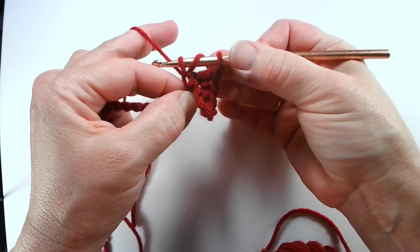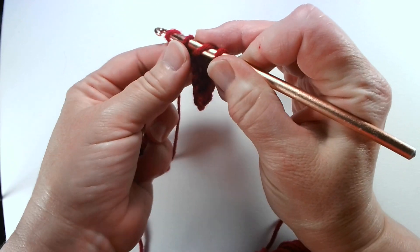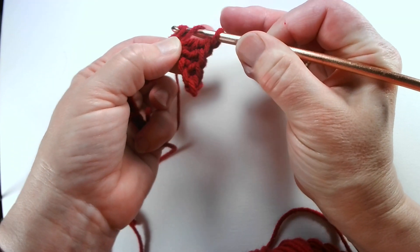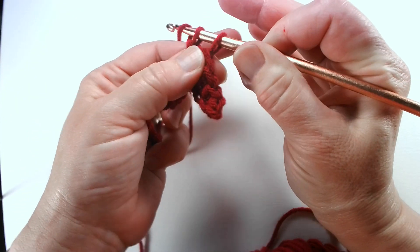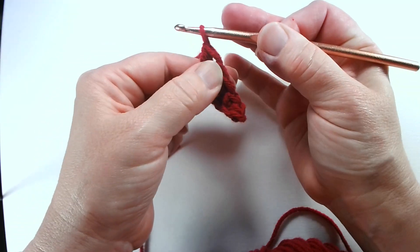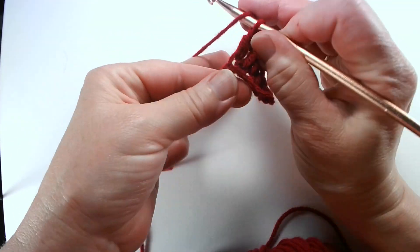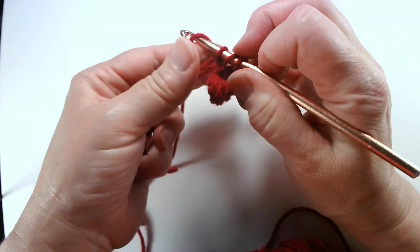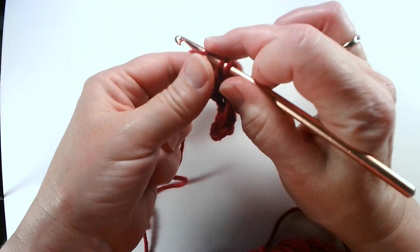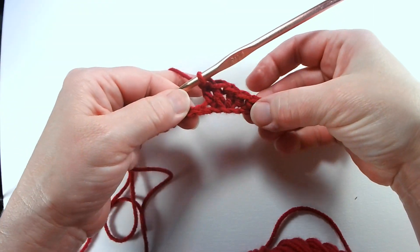I'm going to wrap again and bring it through the first two. There's two. Wrap again and bring it through the final two. So I'll show it to you in real time here. So that is a double crochet.